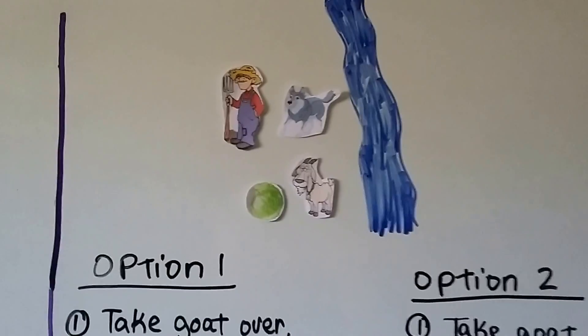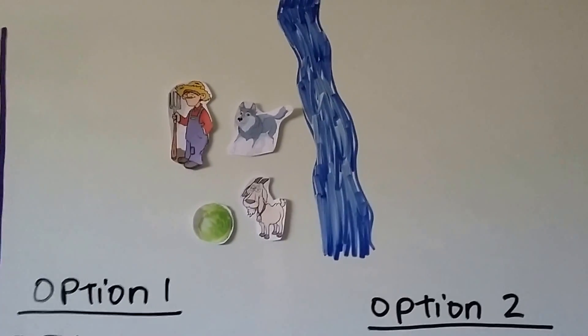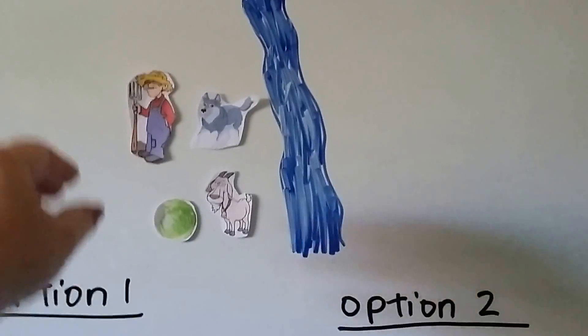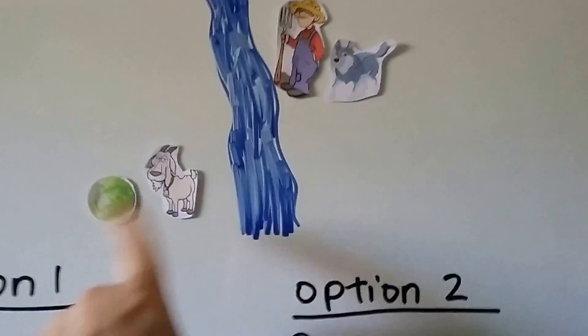So here we have our river, we have our farmer, our wolf, our cabbage, and our goat. He cannot take this wolf to the other side of the river at first because that's going to leave these two together and he'll eat them.